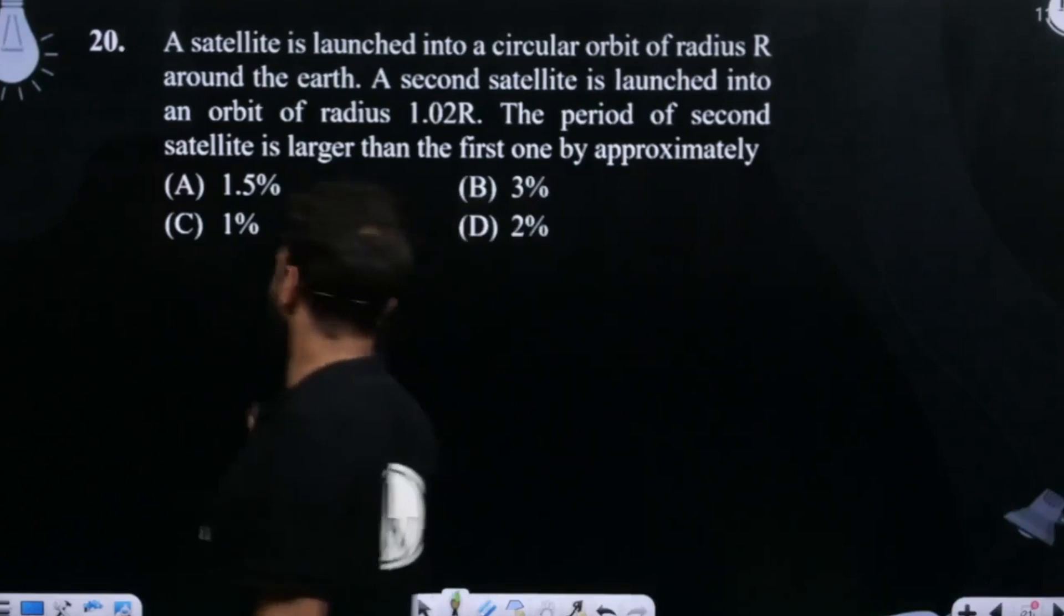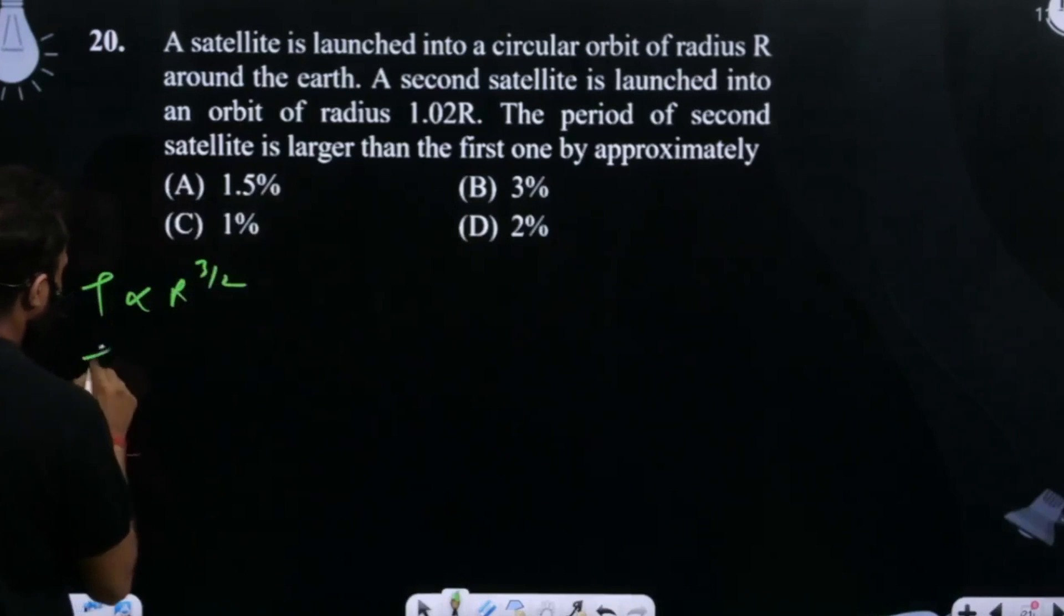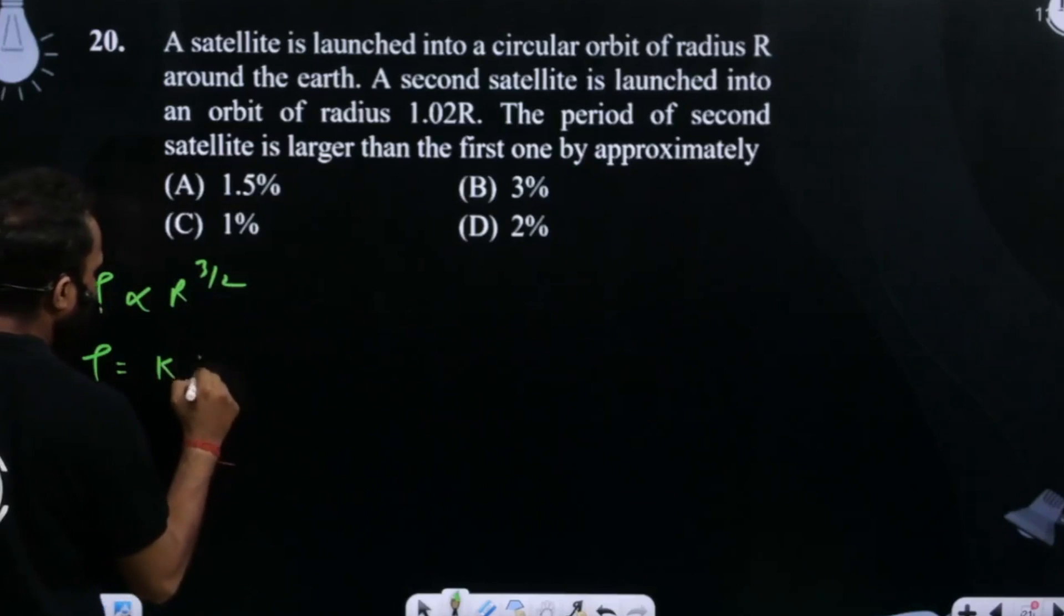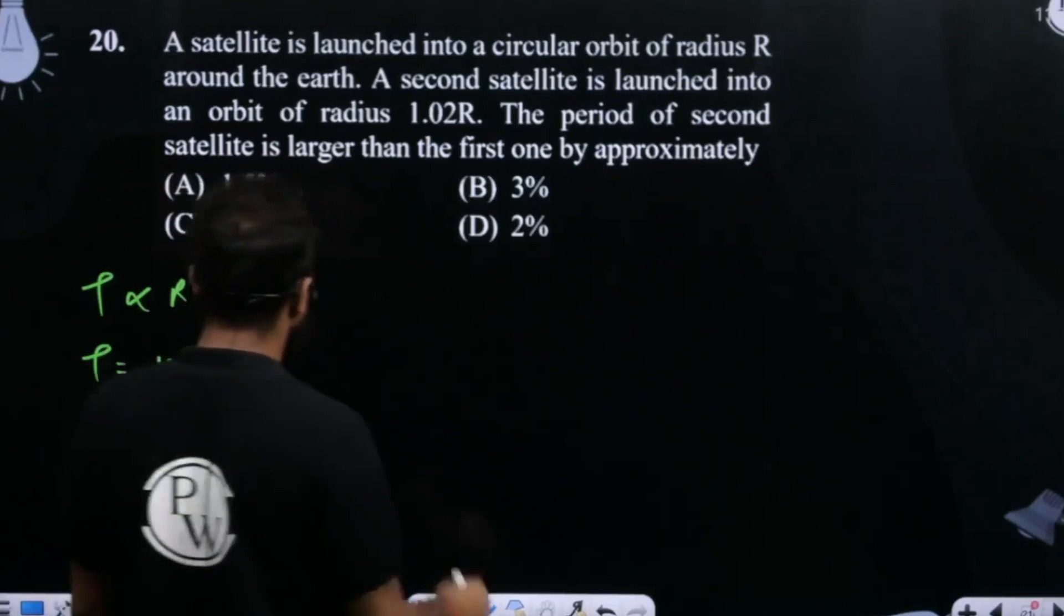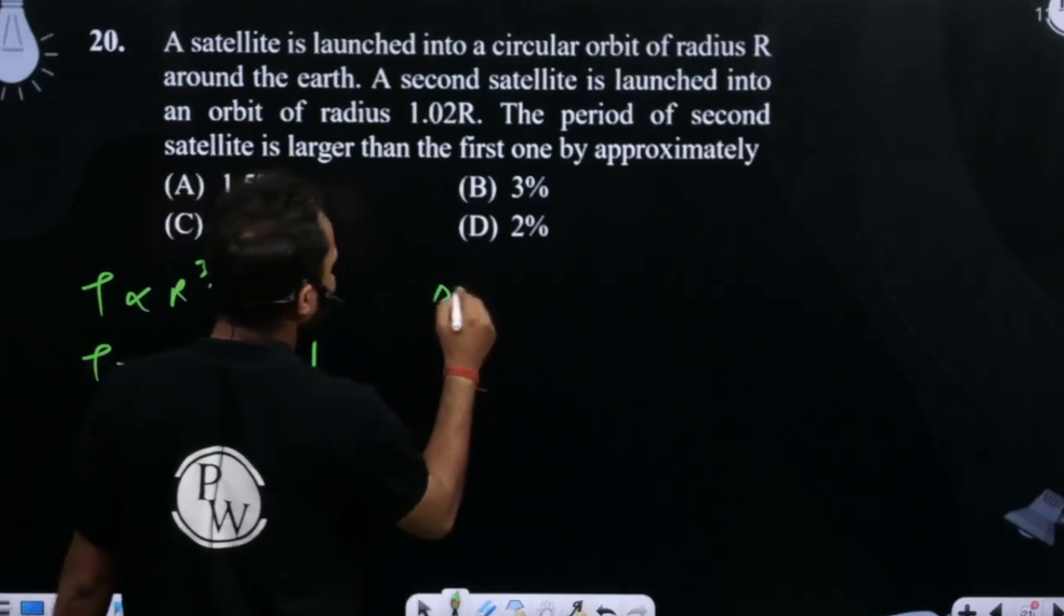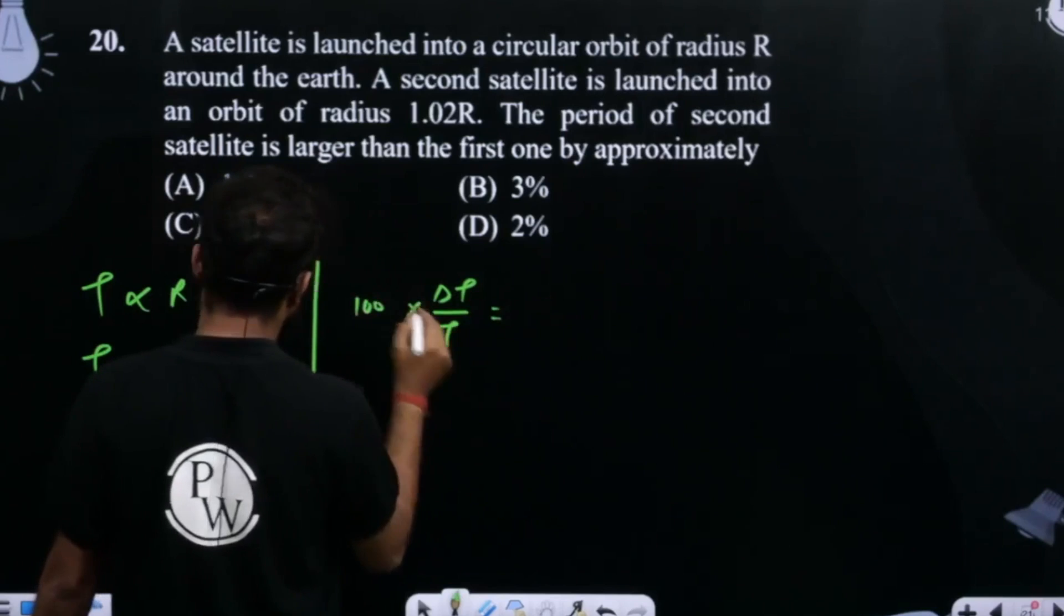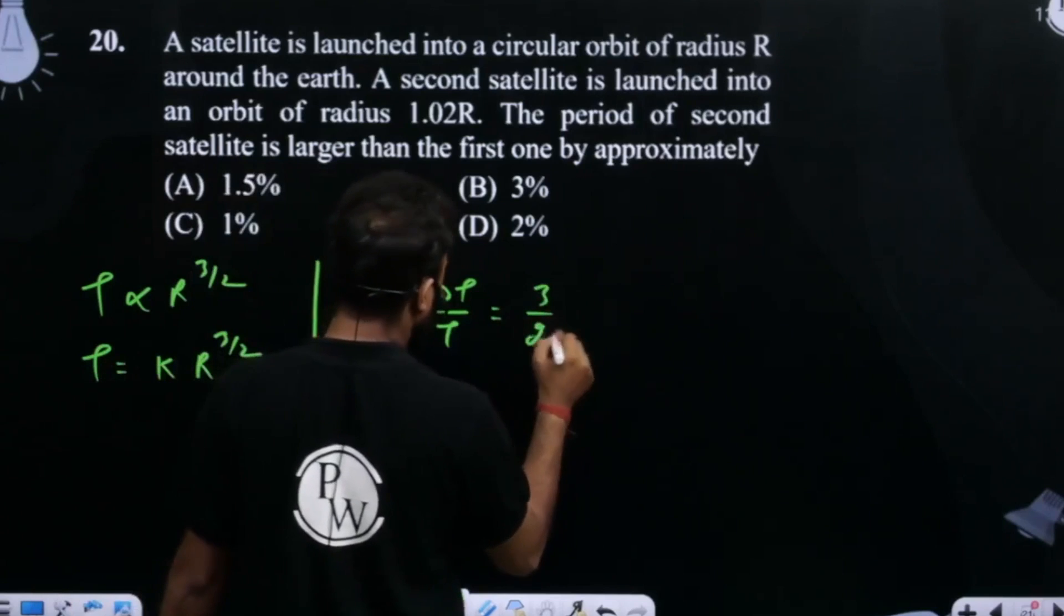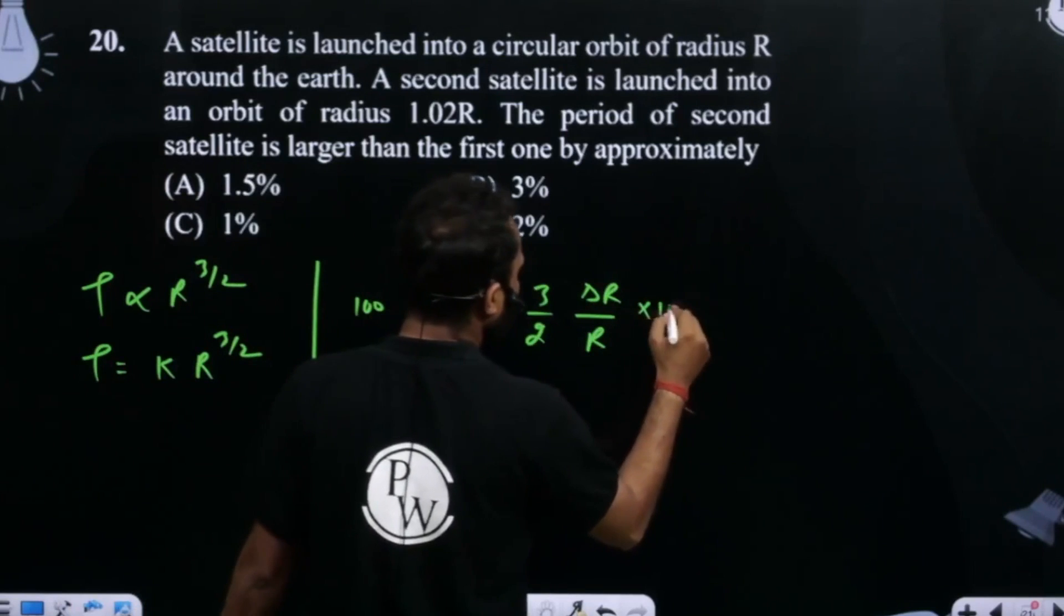We know that time period of satellite is basically proportional to r raised to power 3 by 2. The time period of satellite is nothing but k times r raised to power 3 by 2. If we look at this with units and dimensions, delta t by t multiply by 100 is nothing but 3 by 2 delta r by r into 100.